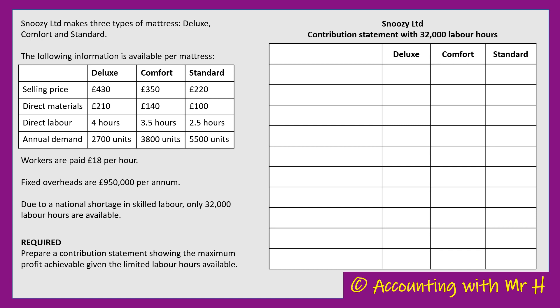Like most marginal costing decision-making, the key is to consider the contribution. The formula for contribution per unit is selling price per unit minus the variable or direct costs per unit. On the right-hand side, I've got my layout ready with a title: Snoozy Limited - contribution statement with 32,000 labour hours.